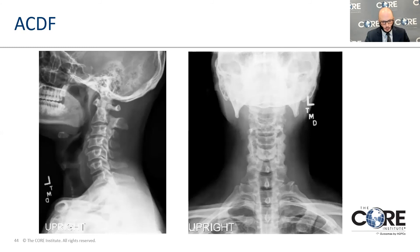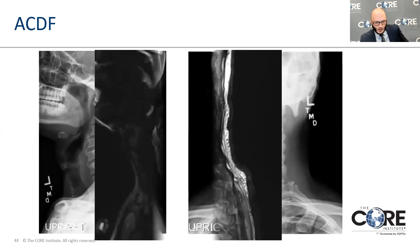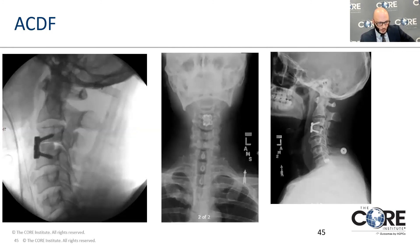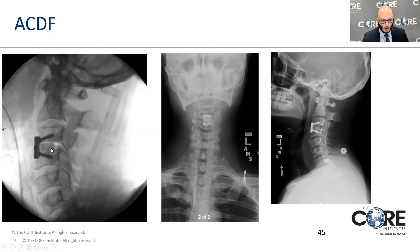This is a patient who got an ACDF for stenosis at C3-4. You can see a plate in the front of the neck — this gray rectangle is a bone implant where the disc material used to be, and screws are used to anchor the plate into the bone.